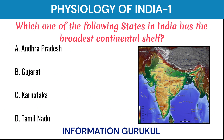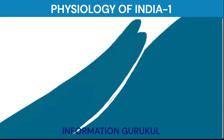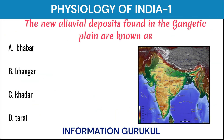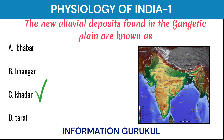Which one of the following states in India has the broadest continental shelf? Tamil Nadu. The new alluvial deposits found in the Gangetic Plain are known as Khadar.